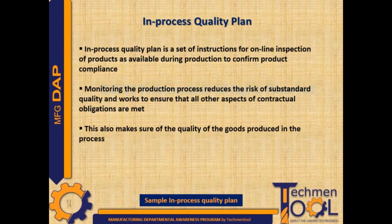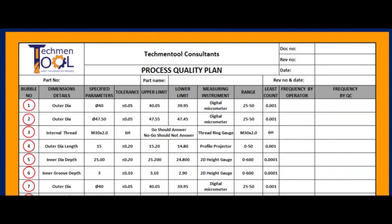This also makes sure of the quality of goods produced in the process. This is the sample format for the process inspection plan. This includes information about product description, bubble number, parameter, specification and its tolerances, specific limits, measuring instrument details, its range and least count, and frequency defined by the operator and QC.